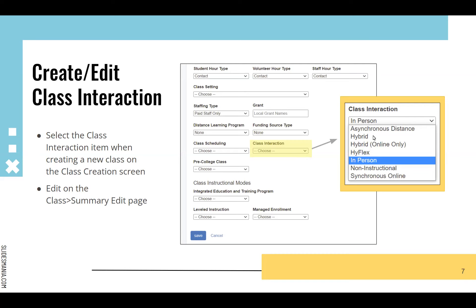We decided to change this field to track the ways that classes interact, or the delivery model as the MDE folks refer to it. The options now are: asynchronous distance, hybrid, hybrid online only, high flex, in-person, non-instructional, and synchronous online. The impetus behind that was obviously so many classes went online in various versions during COVID, and we wanted a better way to describe how classes are meeting. This field is now required when creating a new class.